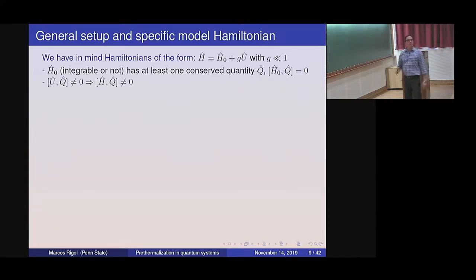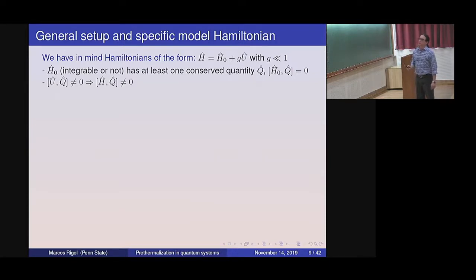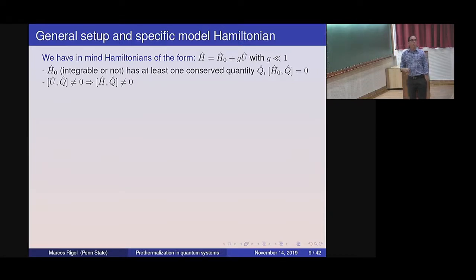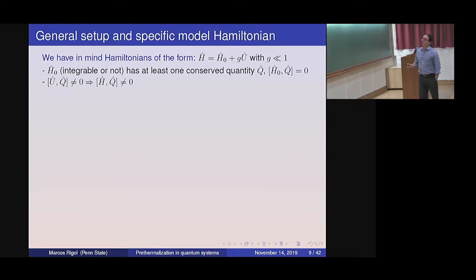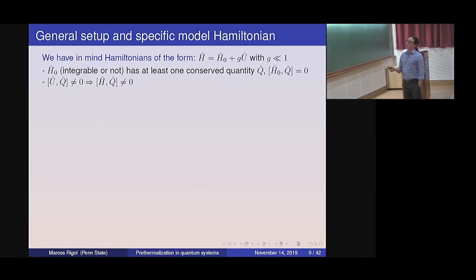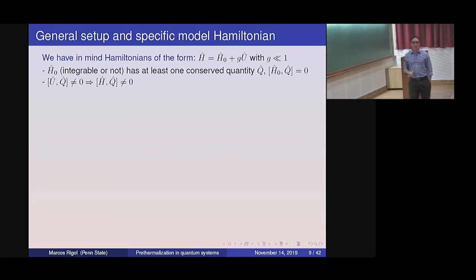Our setup is different from Peter's discussion. We have some unperturbed Hamiltonian that drives the dynamics — that Hamiltonian can be integrable or not, but importantly it has some conservation laws. If it's integrable, it has infinitely many; if non-integrable, at least one. We think of a weak perturbation that breaks those conservation laws — this U does not commute with Q, meaning the new Hamiltonian does not commute with the conserved quantity, so the perturbation breaks something that was conserved.